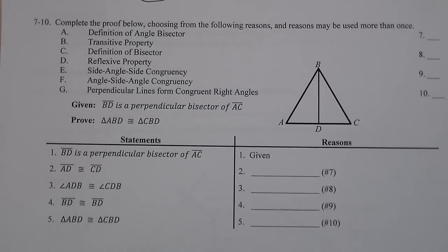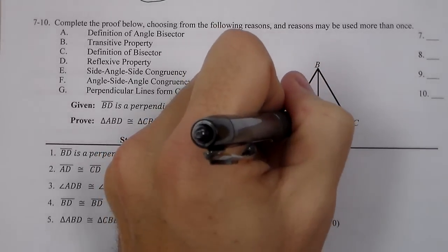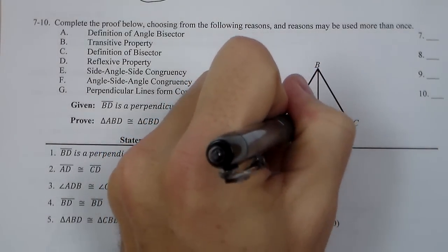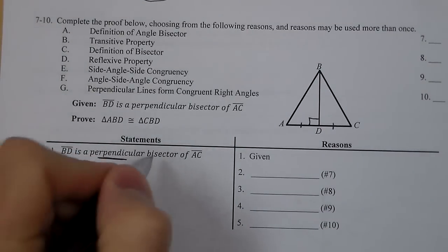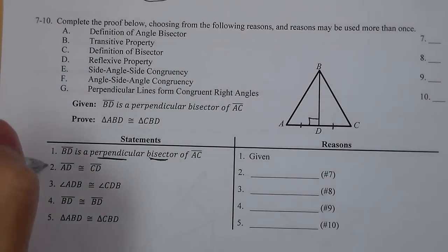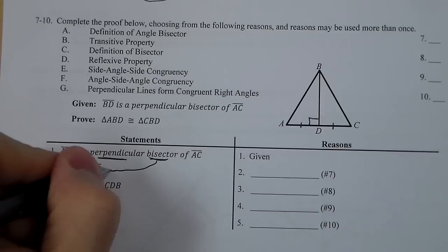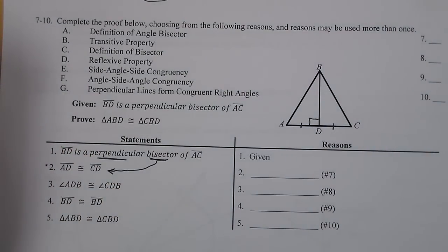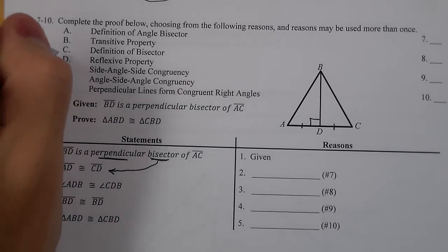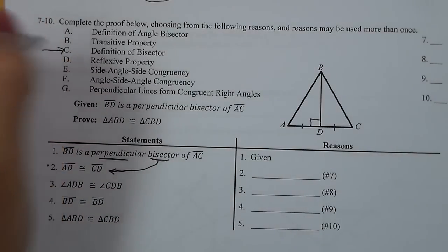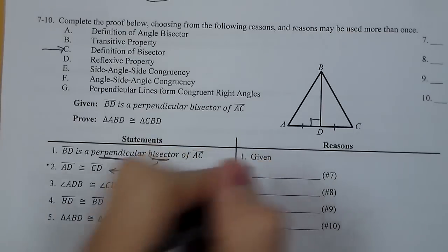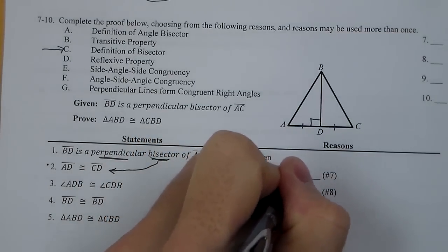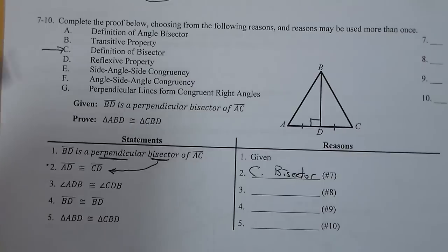Now for our next set, we have our proof. First off, BD is a perpendicular bisector of AC. So it means it's perpendicular and it bisects. So it probably is going to address both of these. The fact we have right angle and it bisects. So here AD and CD are the bisector part of it. So we need something about maybe a midpoint, a bisector, something we can use. I like this one right here, definition of a bisector. Because if this line bisects at point D, it's going to make that segment into two congruent parts.